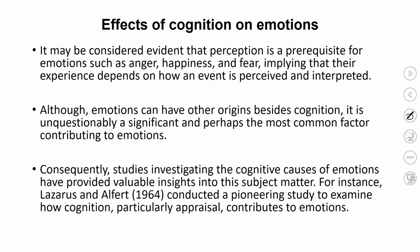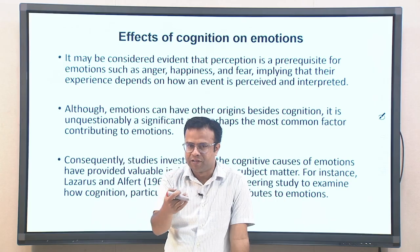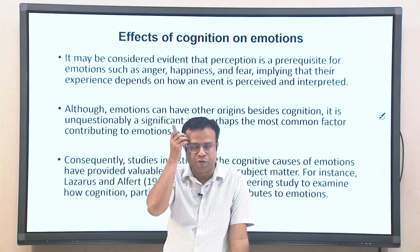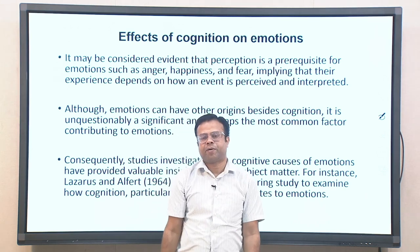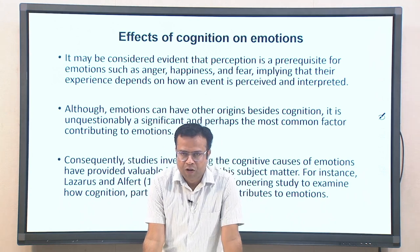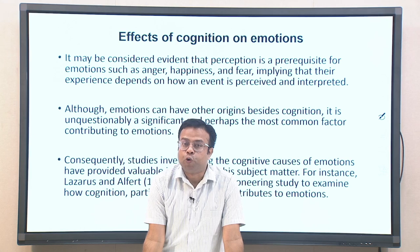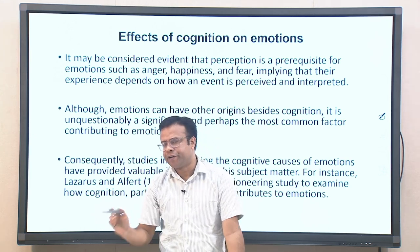A basic level of perception is required to experience emotions, and which emotion is experienced depends on your perception and interpretation. Although emotion can have other origins besides cognition — for example, Zajonc talked about a startle response where a loud sound bypasses cognition — according to cognitive theorists, at least a basic level of cognition is necessary for experiencing emotion and is unquestionably the most common factor contributing to emotions.